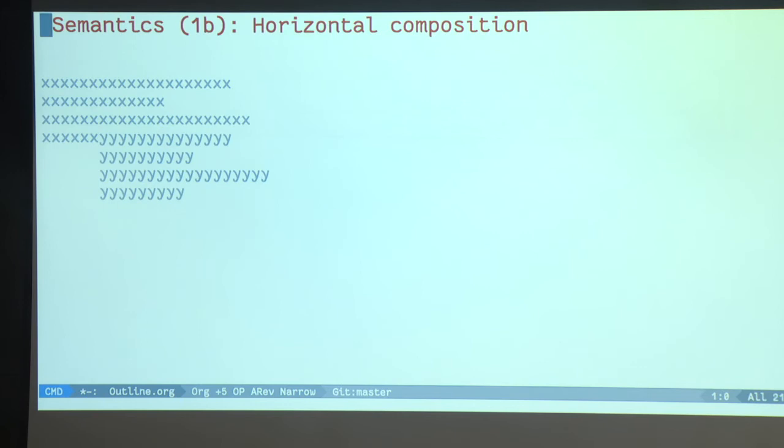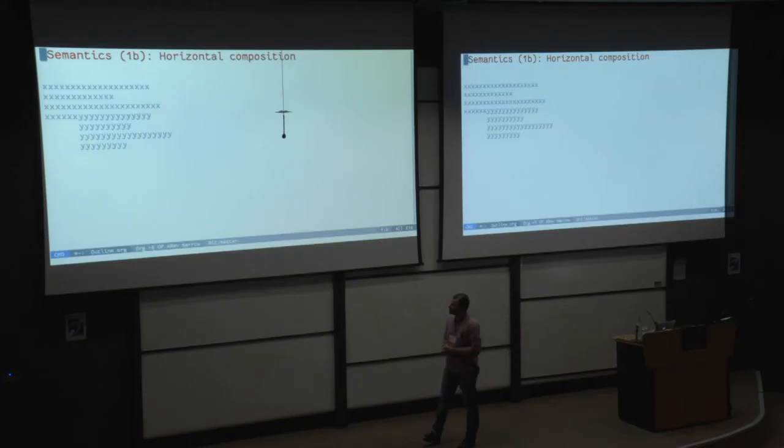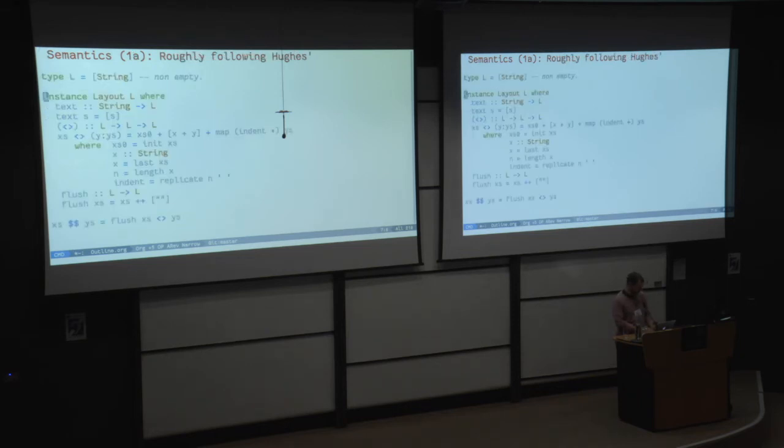So this is what horizontal concatenation does. So if you have two layouts, the first layout is represented by x's up here. And the second layout is represented by y's. We want to abut the second layout against the last character of the last line of the first layout. So this is what it looks like on an example. Here is the code that does that.